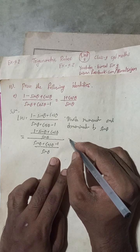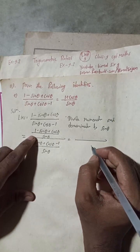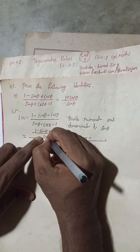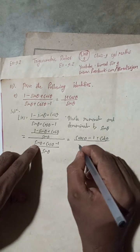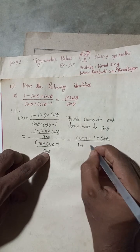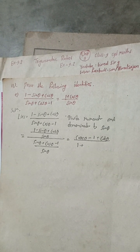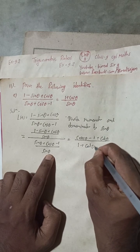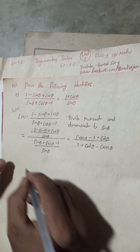Multiply or divide any equation by 1 and it doesn't affect the whole equation. So after dividing separately, we get: 1/sinθ is cosecθ, cosθ/sinθ is cotθ, sinθ/sinθ is 1, and cosθ/sinθ is cotθ. Now we can arrange this equation.